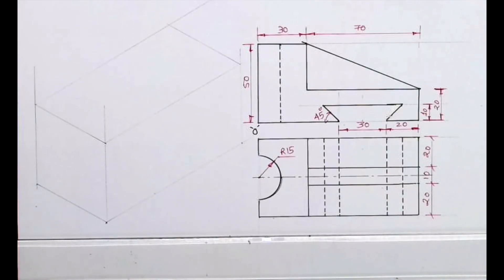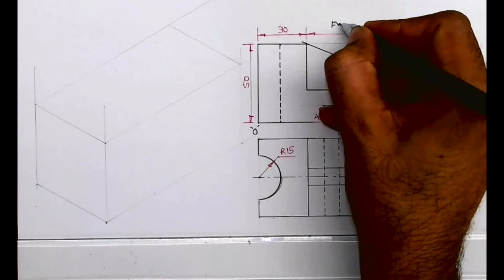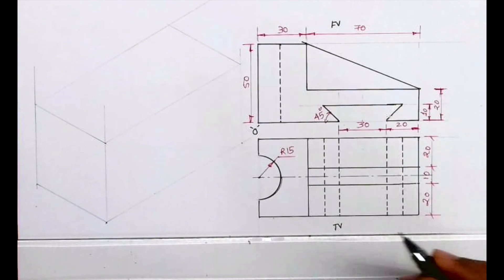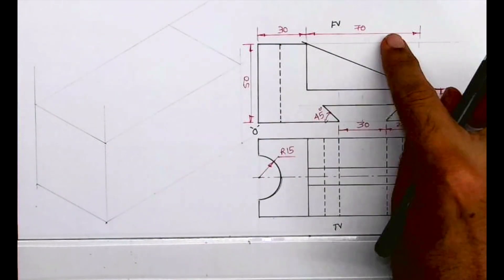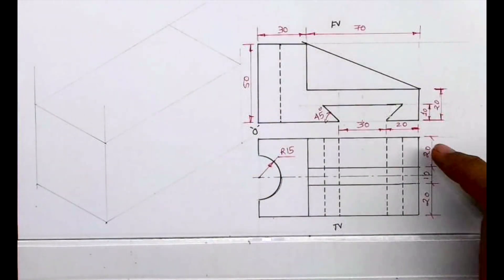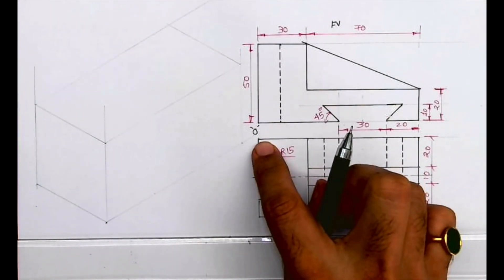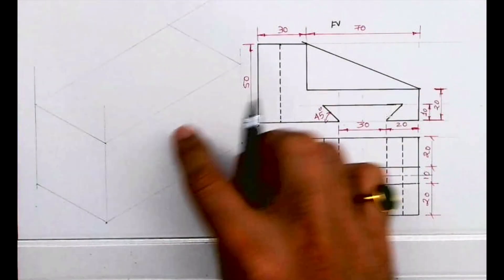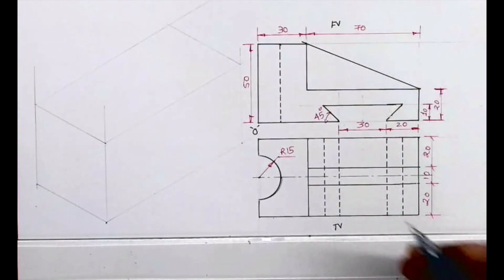Welcome to technical drawing. Today we will see this sum. They have given us front view and top view, and we need to draw isometric view. On the right side: 100 height, 50 width; on the left: width 50. So 100 will go on the right side of O, 50 on the left, and height will be 50. We'll draw the layout first.